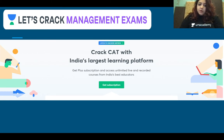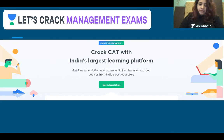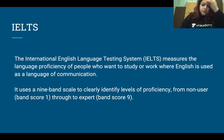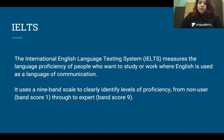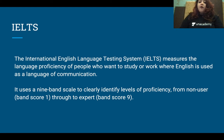In my previous session, I had spoken about the two kinds of tests that IELTS has and which one you would choose and what is the right one for you. I'll give you a quick overview again of what exactly IELTS is. IELTS is the International English Language Testing System, which measures the language proficiency of people who want to study or work where English is used as the language of communication. It uses a 9-band scale to clearly identify levels of proficiency, from a non-user which is band 1 to an expert level which is band 9.